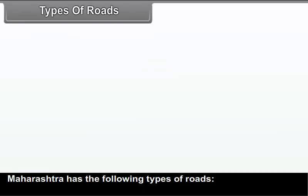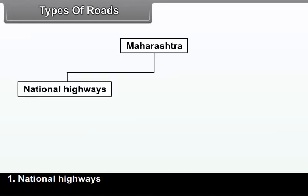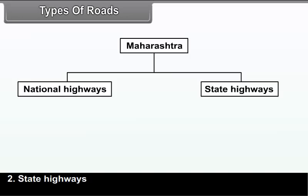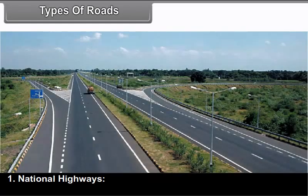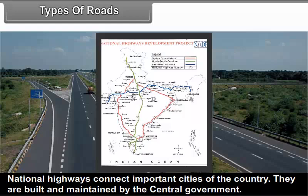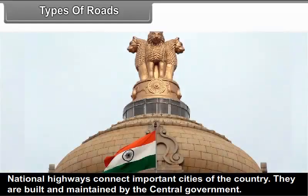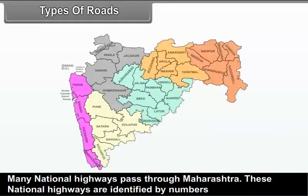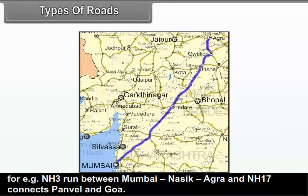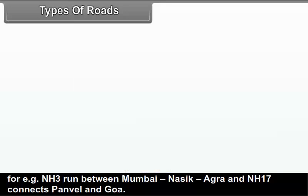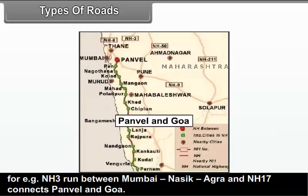Maharashtra has the following types of roads: National Highways, State Highways, District Roads, and Village Roads. National highways connect important cities of the country and are built and maintained by the central government. Many national highways pass through Maharashtra and are identified by numbers — for example, NH3 runs between Mumbai–Nasik–Agra and NH17 connects Panvale and Goa.